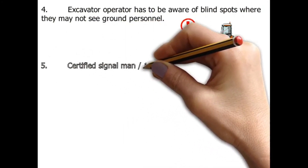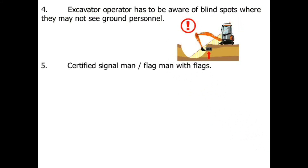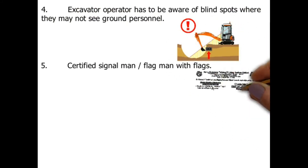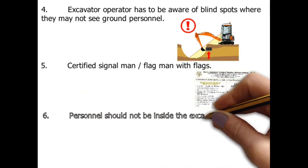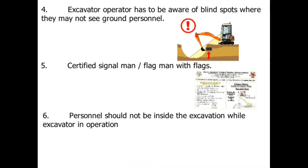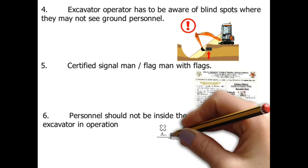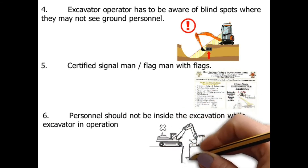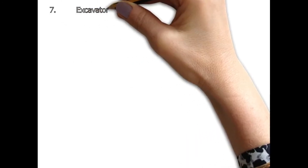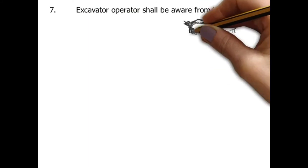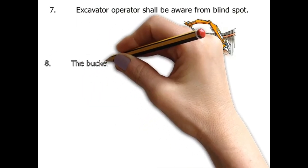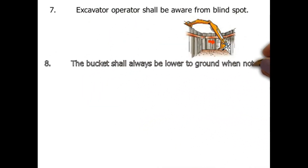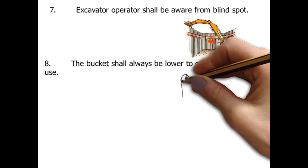Excavator requirements continued: five, a certified signal man and flag man with flags are required; six, personnel should not be inside the excavation while the excavator is in operation; seven, the excavator operator shall be aware of blind spots; eight, the bucket shall always be lowered to the ground when not in use.